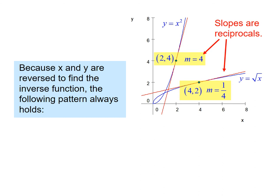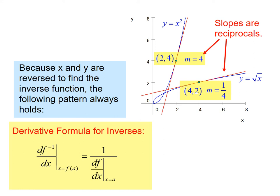So this is the pattern we always observe. The derivative of the inverse function evaluated at x equals f(a), so f(a) would be the y value from the original function, is equal to 1 over the derivative of the original function at x equals a. I call these corresponding points. The points (2,4) and (4,2) would be corresponding points, and the derivatives at those points are reciprocals.